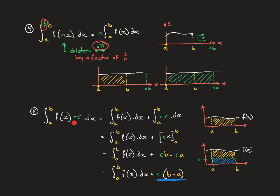This next property has our function being translated up or down. Working through the integral calculus, you end up with a common factor of c outside of b minus a. If the function shifts up by c units, a gap in the shape of a rectangle appears underneath. The area of that rectangle is length times width, which is (b minus a) times c. If c is negative, that amount of area is subtracted from underneath the function.